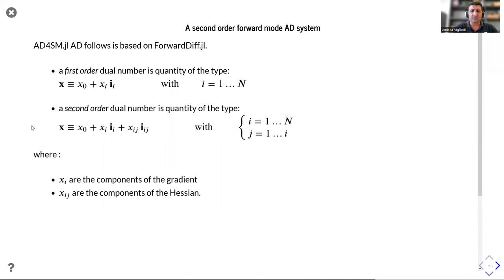A second order dual number will have an additional imaginary part, which is a second order tensor representing the hessian. Since we know that the hessian is symmetric, we will only deal and store half of the hessian. So, if i goes from 1 to n, j will go from 1 to i. That means we stop on the diagonal of the hessian.